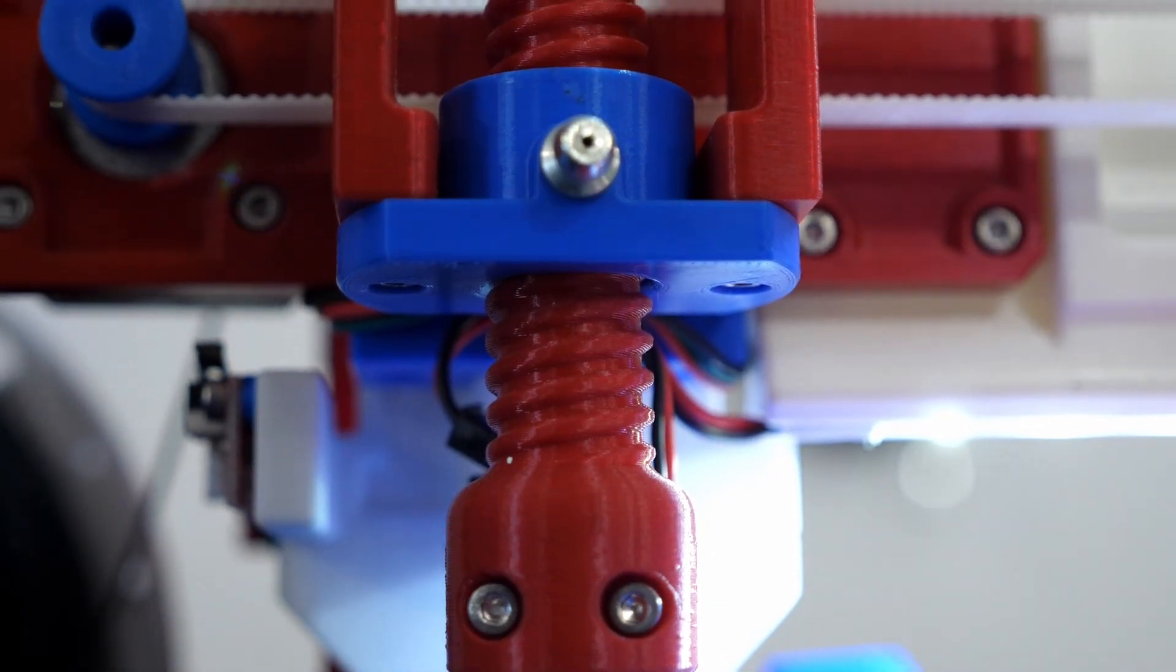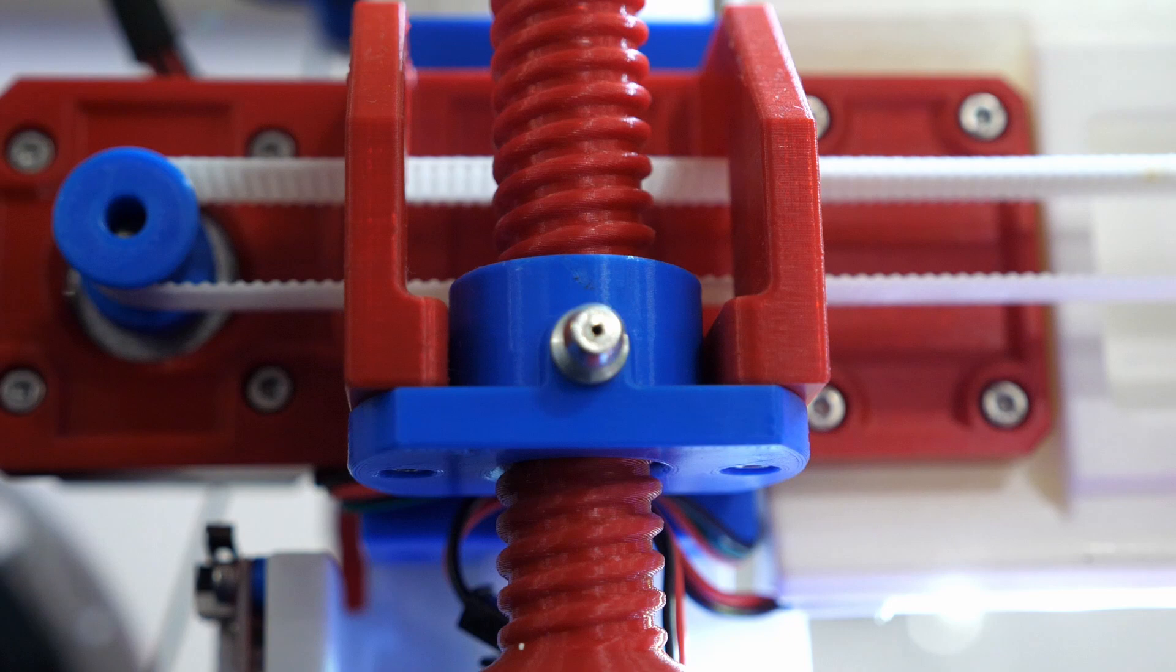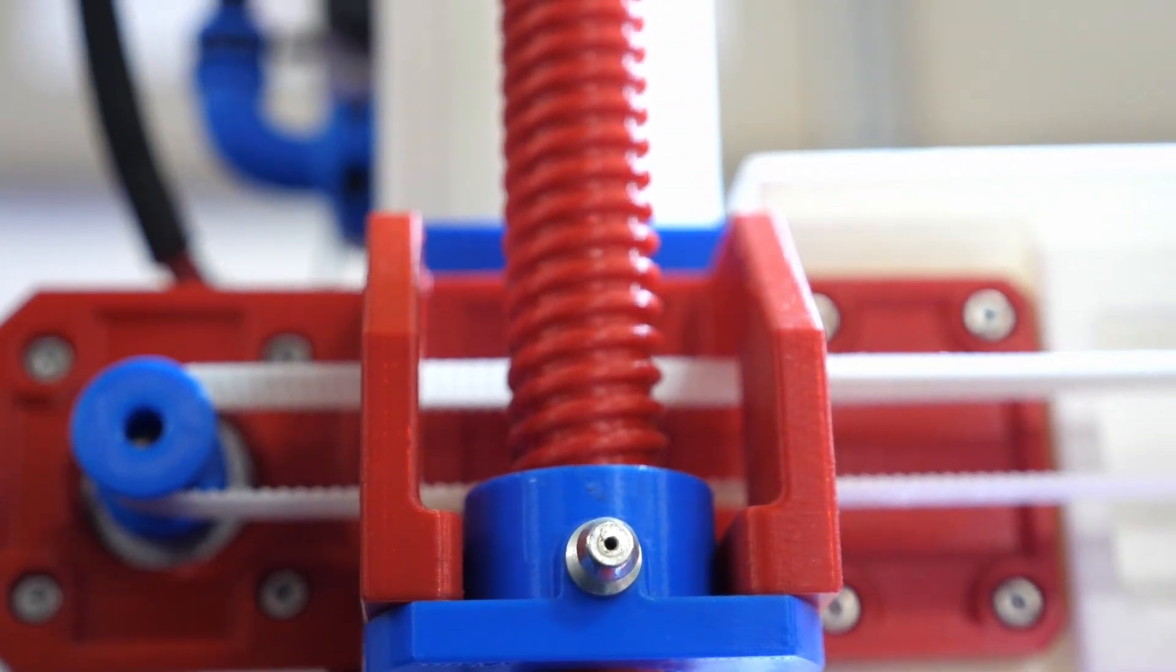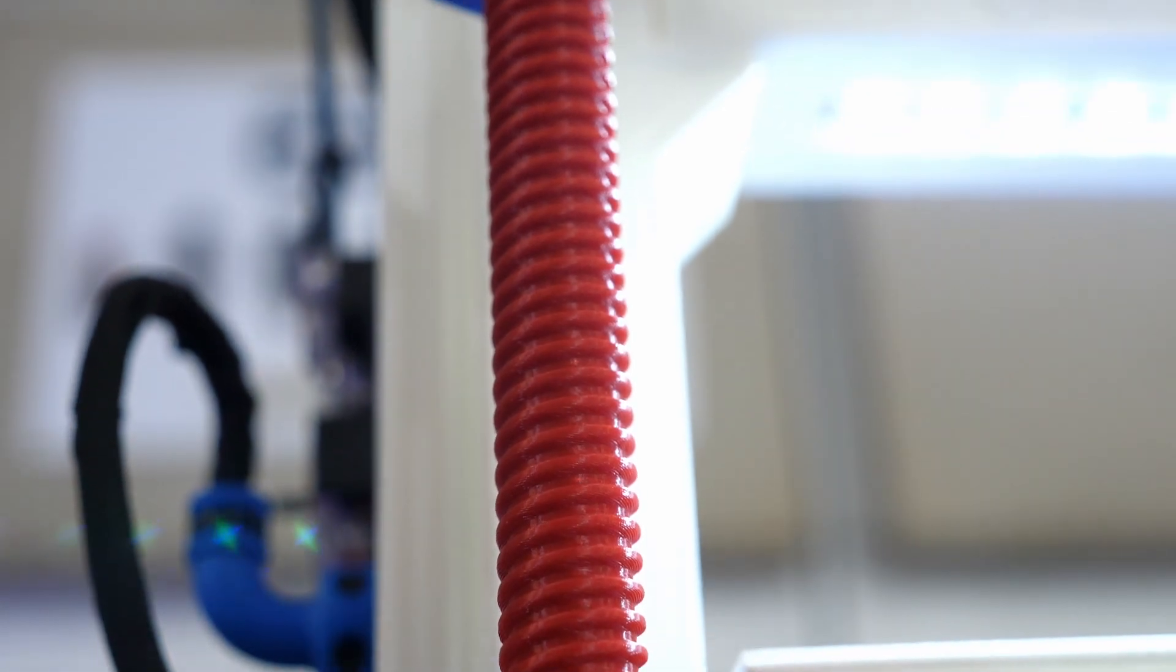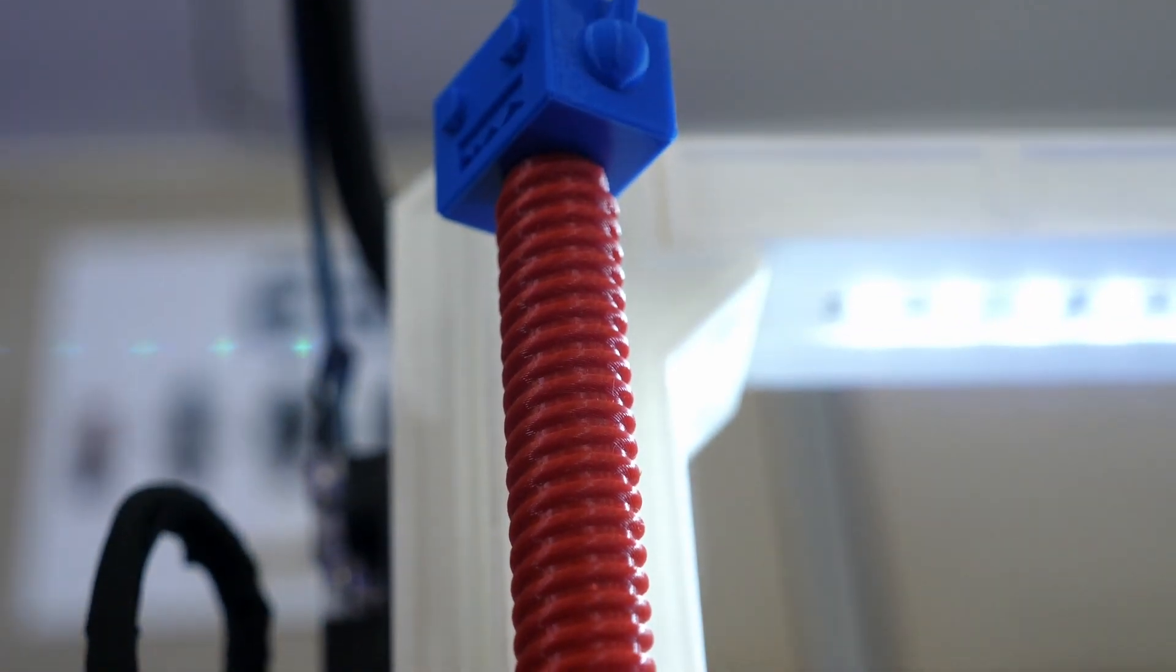The Z-axis is driven by two 3D printed simple trapezoidal lead screws which work quite well because the load on them is minimal. They aren't even significantly greased and were only coated with some teflon spray when new.